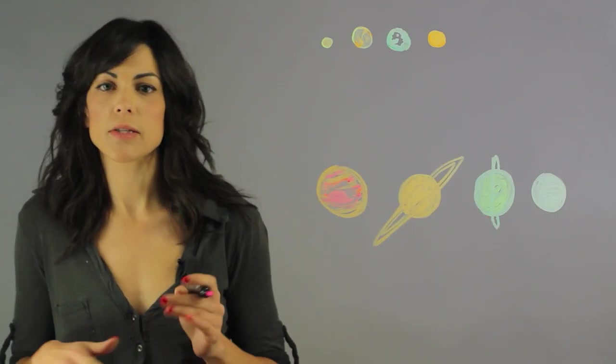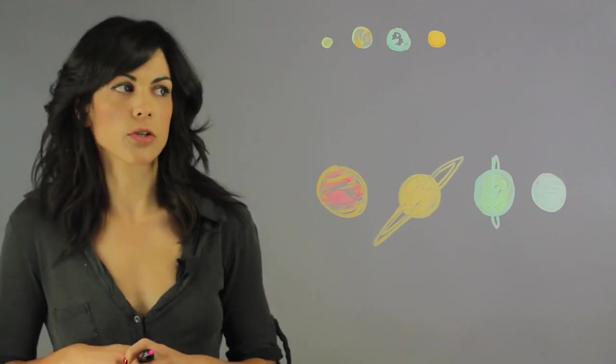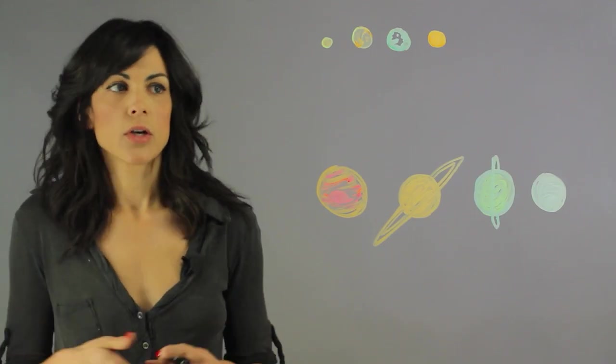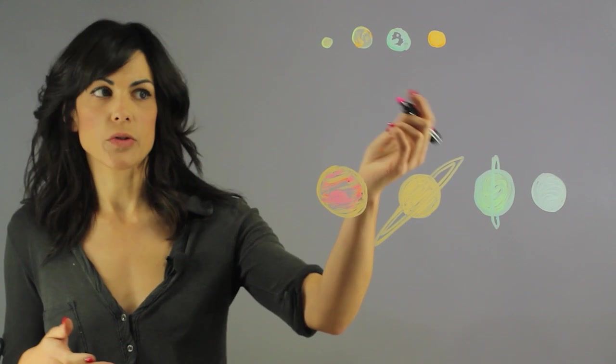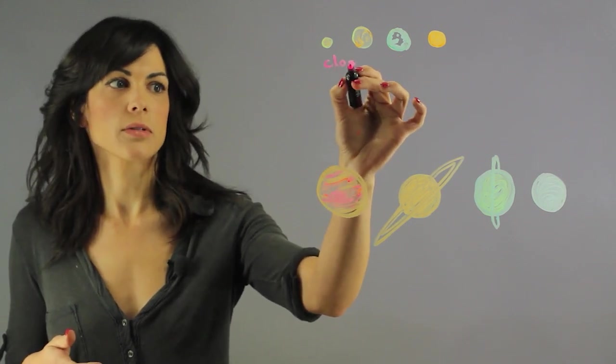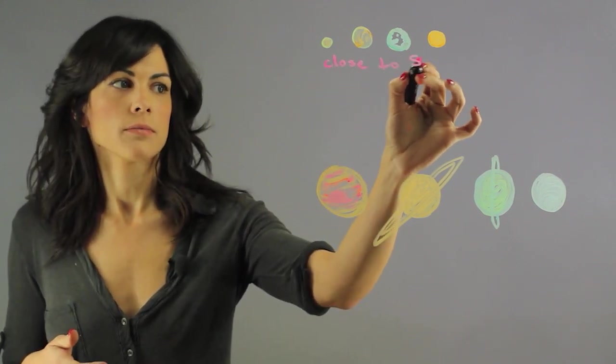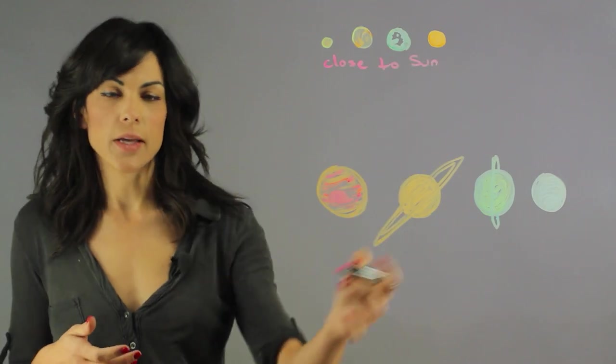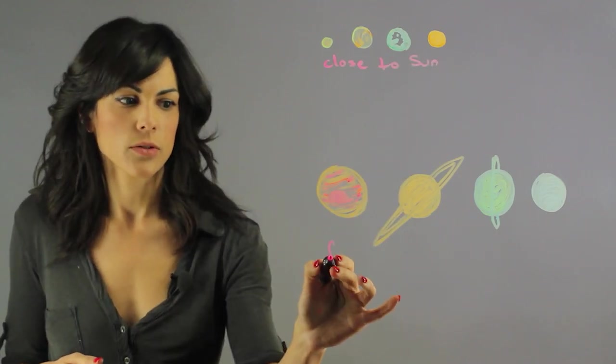So let's talk about some of the main differences between them. First let's talk about location. The inner planets are closer to the Sun, while the outer planets are far away from the Sun.